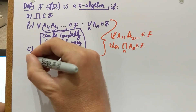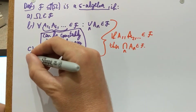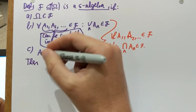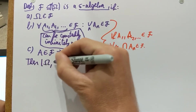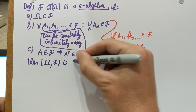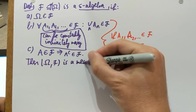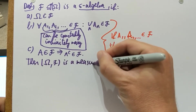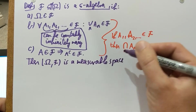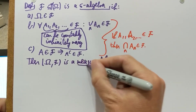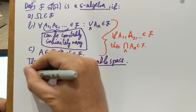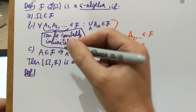Let me just mention that if this whole definition holds, then the pair omega and F is called a measurable space. This is going to be the pair on which measures will live. So the next thing I want to do is define what a measure is.